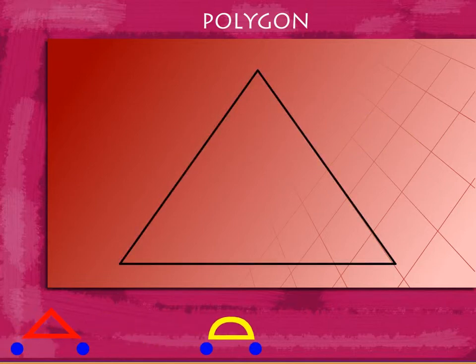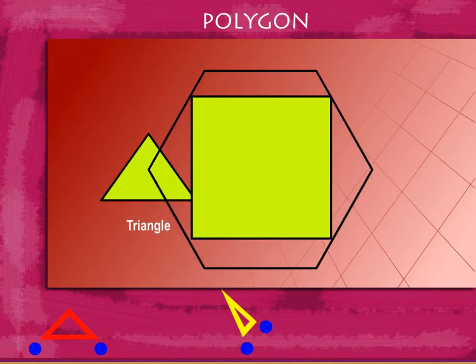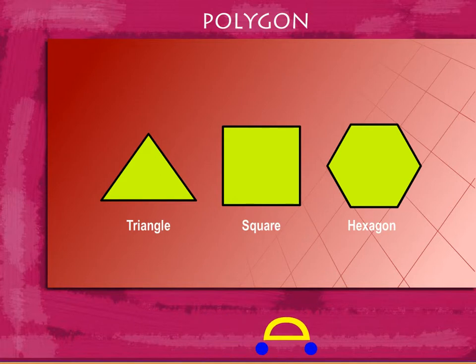A three-sided polygon is a triangle. A figure with four equal sides is a square, and a six-sided polygon is called a hexagon.